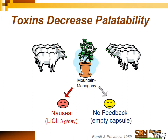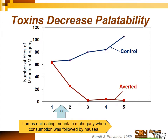One group ate mountain mahogany and got nauseous; the other ate mountain mahogany with no negative feedback. On the first day before any feedback, both groups liked mountain mahogany equally. By the second day, the control group started eating more and increased intake over time. By day two, the animals that received lithium chloride went straight off mountain mahogany, and by day three they wouldn't even look at it. They had formed a strong aversion because every time they took a bite they received negative feedback.